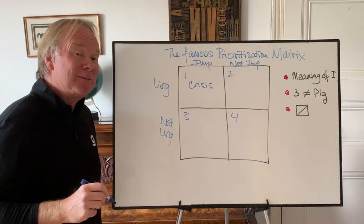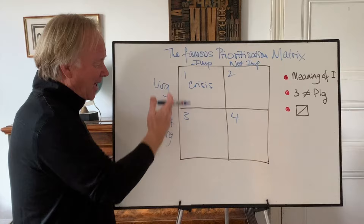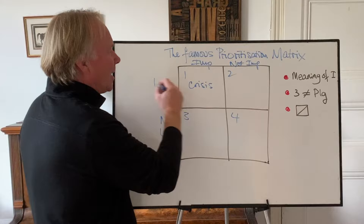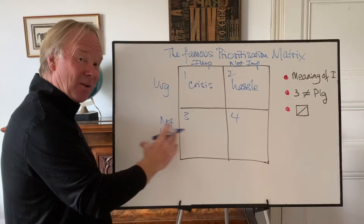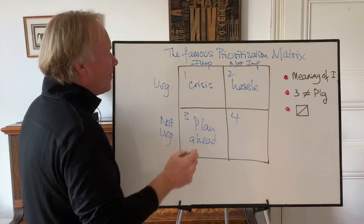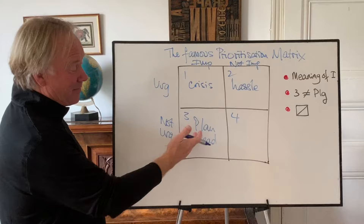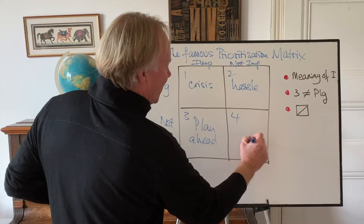Sometimes boxes two and three are reversed depending on which axis you place importance or urgency — it's the same model. The way I've drawn it, box two, urgent but not important, is the hassle box — stuff you have to do straight away but want to minimise time on because it's not important. Box three, important but not urgent, is the plan ahead box. And box four, not important and not urgent, is the don't do it box.